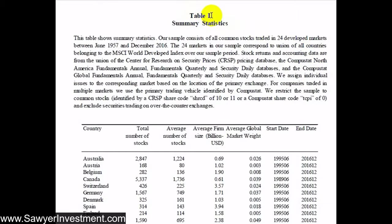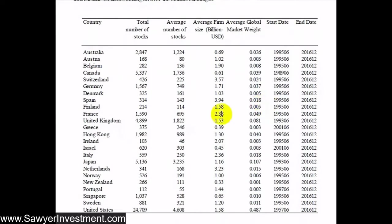Table one has summary statistics to help us understand the characteristics of the data. It spans the June 1957 to December 2016 period, covers 24 developed markets, and represents a little over 54,000 stocks, most of which comes from the United States. The data goes back to 1957 for the US, but generally for other countries it starts in the mid-1990s.